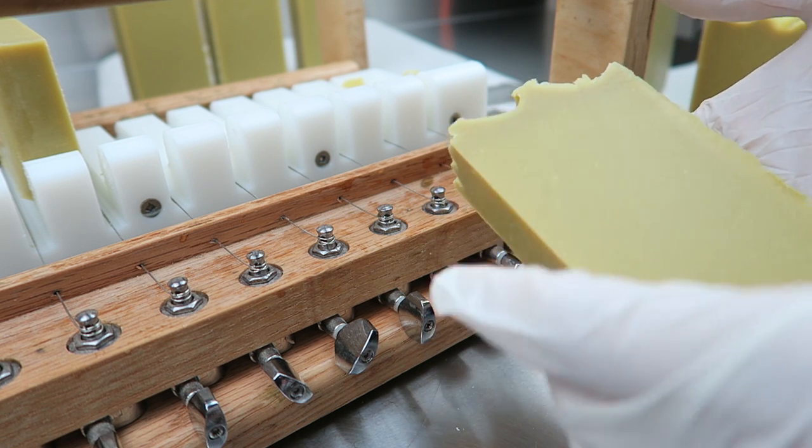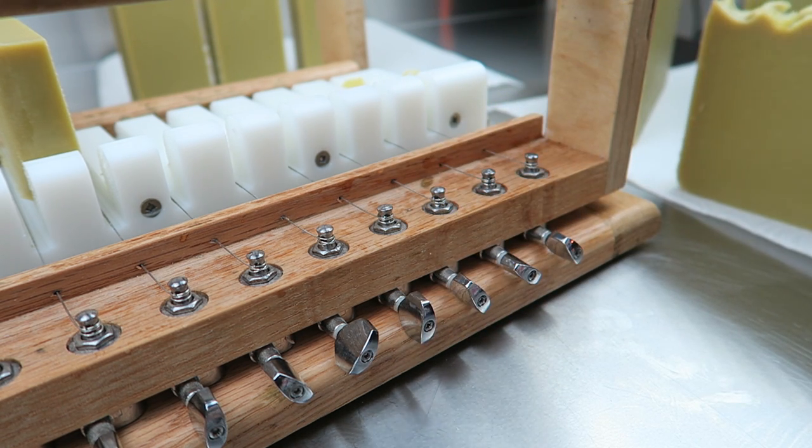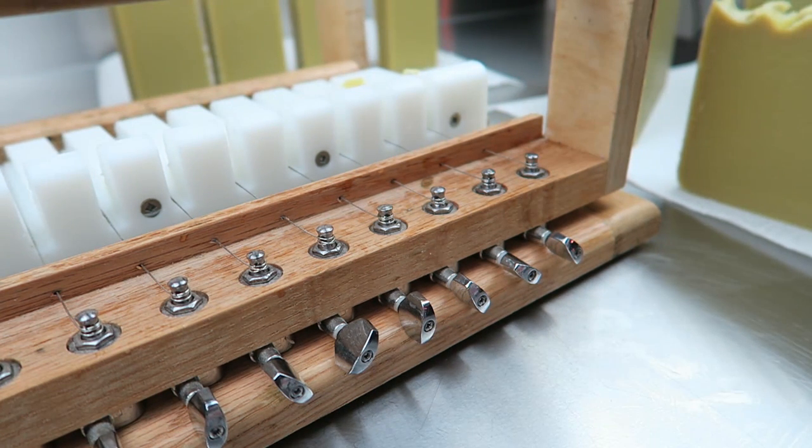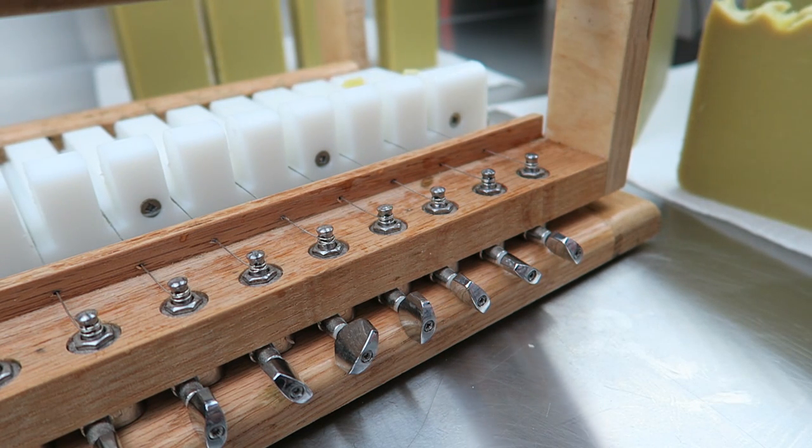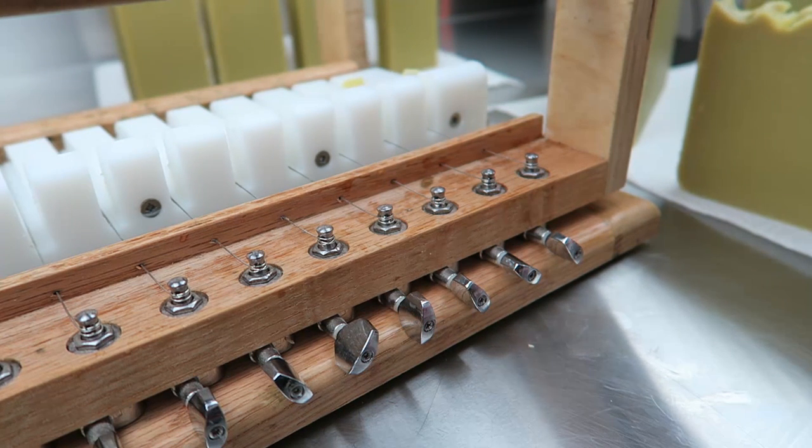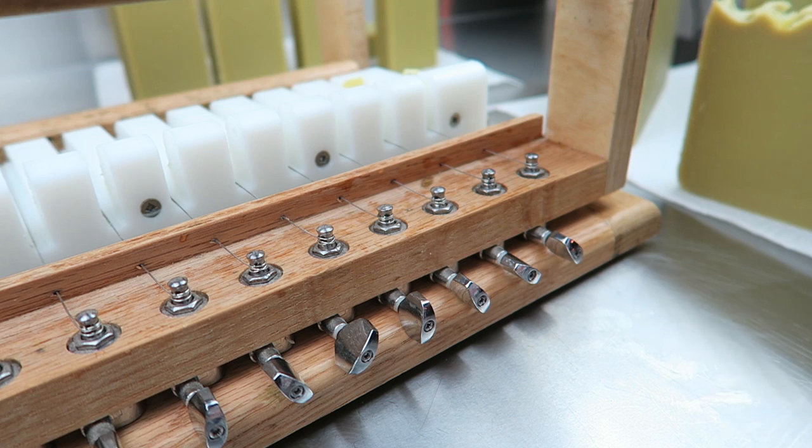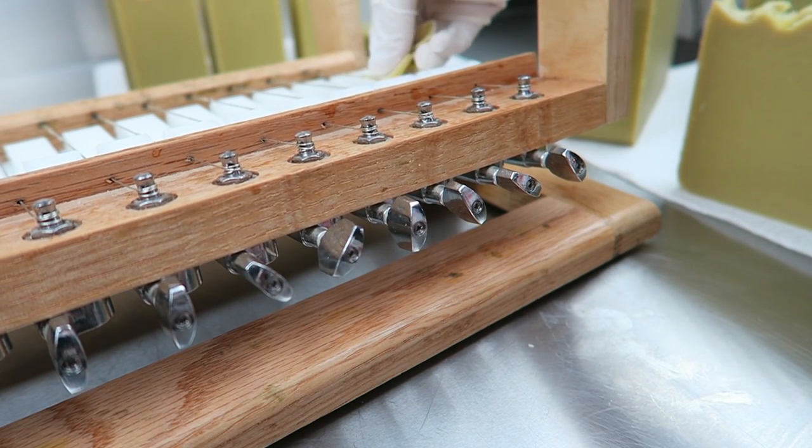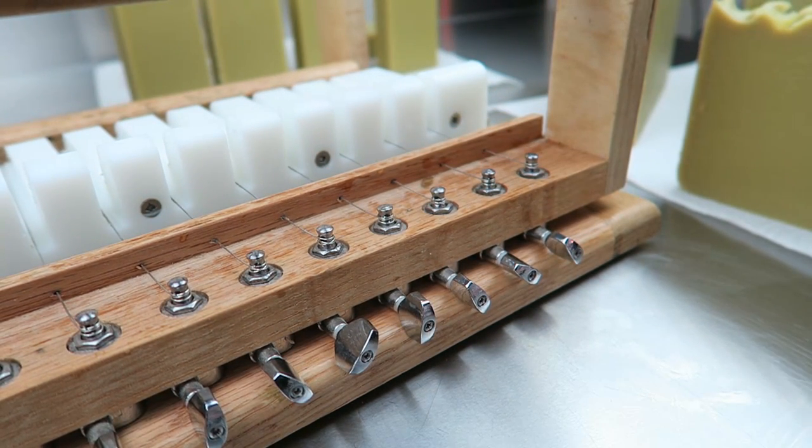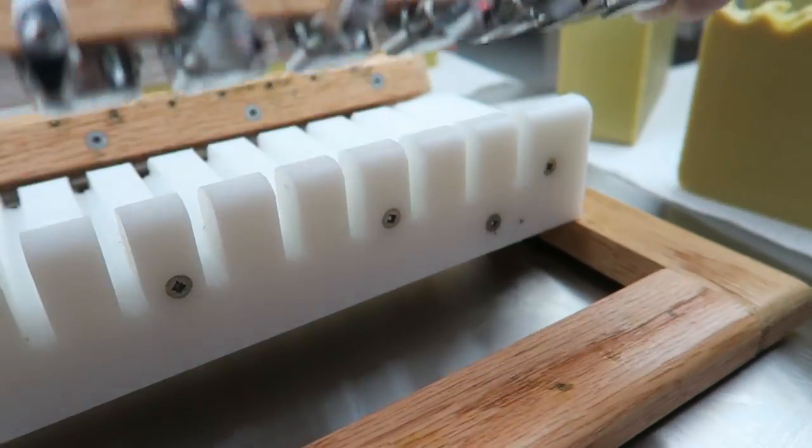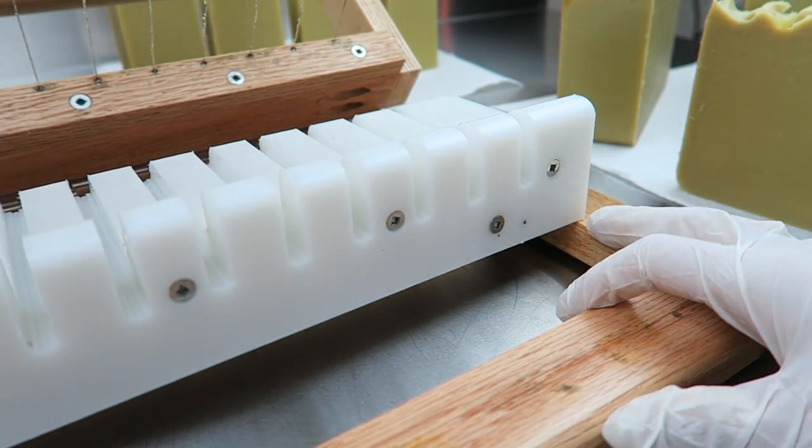Now a question that I've been getting a lot is why does Aleppo soap have to cure for so long. Aleppo soap cures for a minimum of six months, and the longer it sits the better, because it is a high olive oil content soap. Soaps like Castiles have to sit for longer to allow the water to evaporate and the bar to harden. Also, olive oil doesn't create the best lather, but the longer it sits the creamier and more bubbly the lather gets. So you let Aleppo soap set for a minimum of six months to get the bar nice and hard and allow the lather to be desirable instead of slimy.